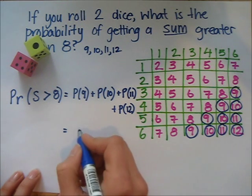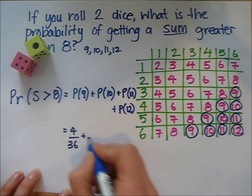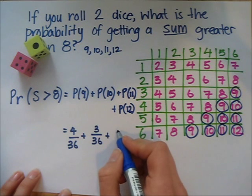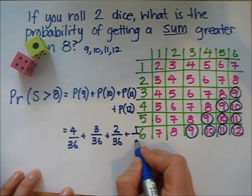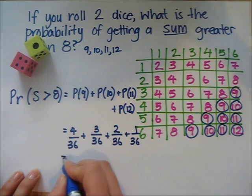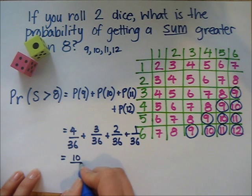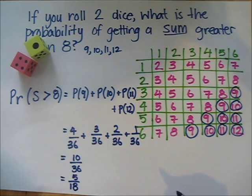There are four ways to get nine, so four out of 36; three ways to get ten, so three out of 36; two ways to get eleven and one way to get twelve. Adding those up gives ten out of 36, which reduces to five eighteenths. So the probability of getting a sum greater than eight is five eighteenths.